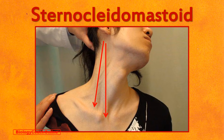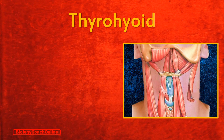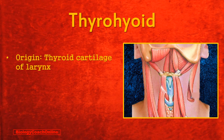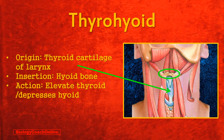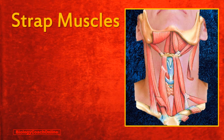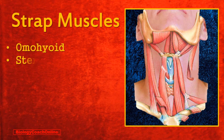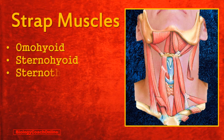The thyrohyoid is a comparatively small muscle that originates at the thyroid cartilage of the larynx and inserts at the hyoid bone. Its action is to elevate the thyroid gland, which is part of the endocrine system. The next three anterior neck muscles are what I call the strap muscles, as they are comparatively long and narrow. We have the omohyoid, the sternohyoid, and the sternothyroid. All of the strap muscles act to depress the larynx.